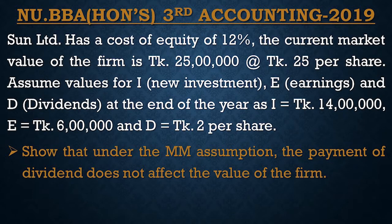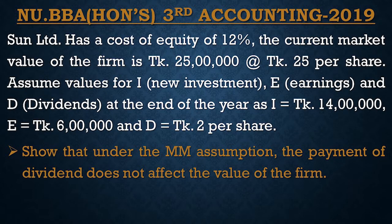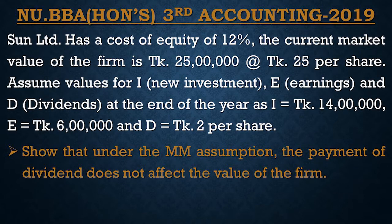Now, the cost of the firm is $8,000 in $70,000. Earnings and dividends at the end of the year: dividends equal to 14 lakhs, earnings is 6 lakhs.